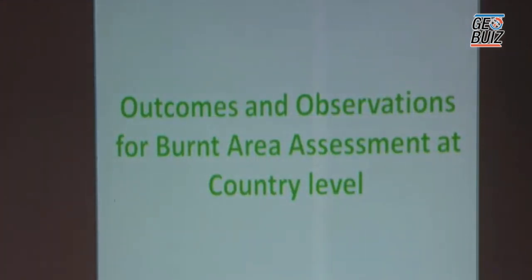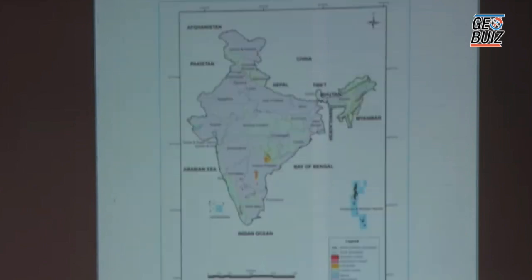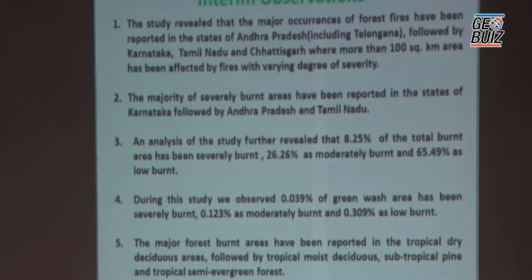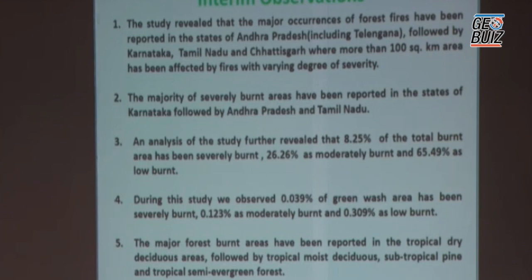The outcomes of the burnt area assessment study at national level show a map indicating where the most severe fire cases have been reported and what severity indices can be expected from particular areas. These are some of the interim observations being prepared for a final report to be submitted to the Ministry of Environment. We also identified fires reported within the recorded forest area under government control, including fire presence within reserved forest areas. Equally important is the forest type as a contributing factor, and based on FSI's forest type map we identified the species most vulnerable to fires.